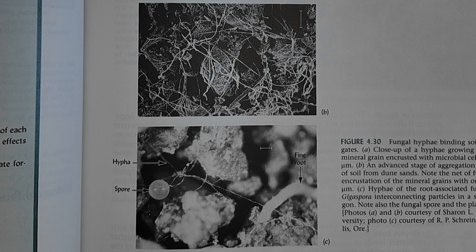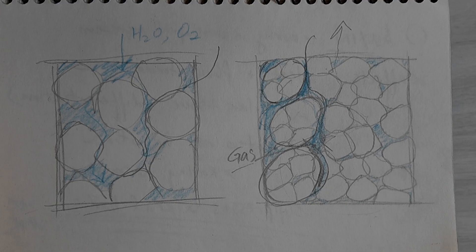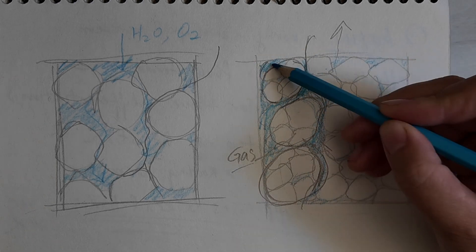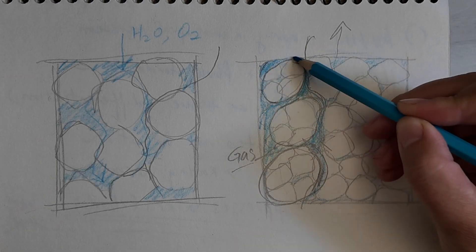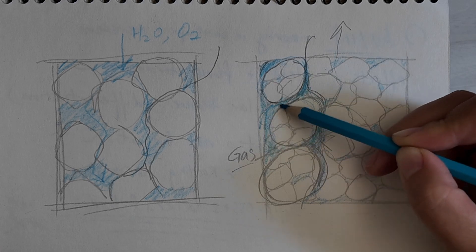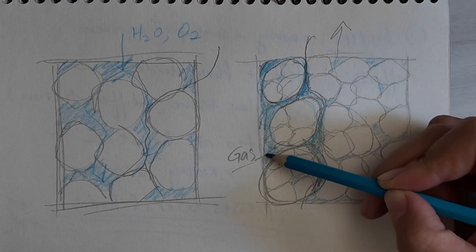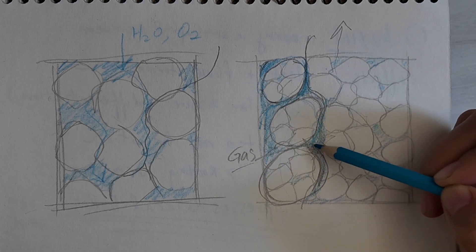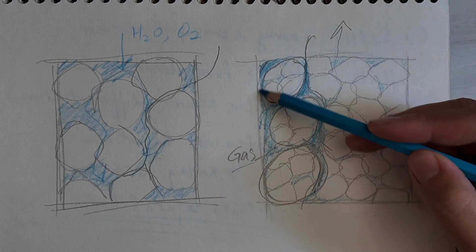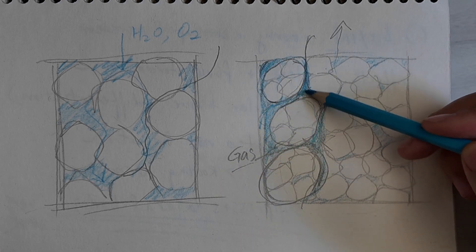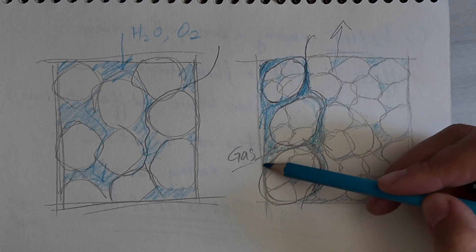A soil that has more organic matter tends to have a lower bulk density. The organic matter promotes biological activity, and the physical and chemical forces — the glues — can all help unite particles into larger aggregates so that you get more pore space around them.